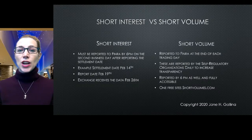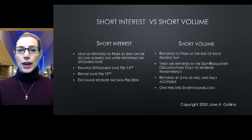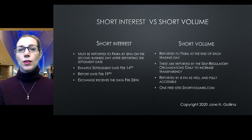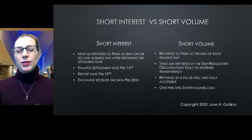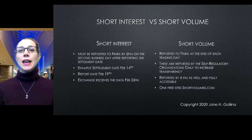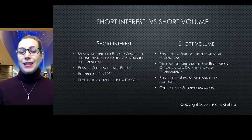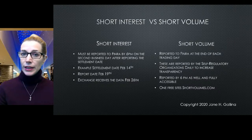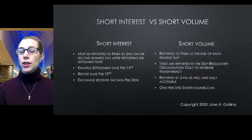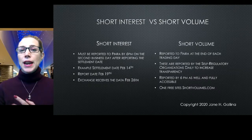Then it goes to the exchanges on the 26th and is released to the public. So looking at a settlement date of the 14th, subtract two more days — that's the 14th, 13th, 12th — the trade likely happened on the 12th. Now it's getting reported to the exchanges on the 26th. That is really old short data. There is more current short data, which is what I use in my daily watch list. If you haven't checked out Ticker Talker, I do my watch list there live every morning from about 8:15 to 9 o'clock.